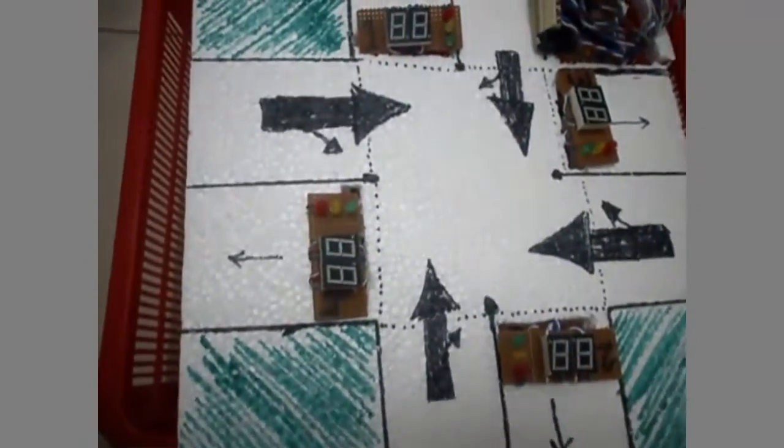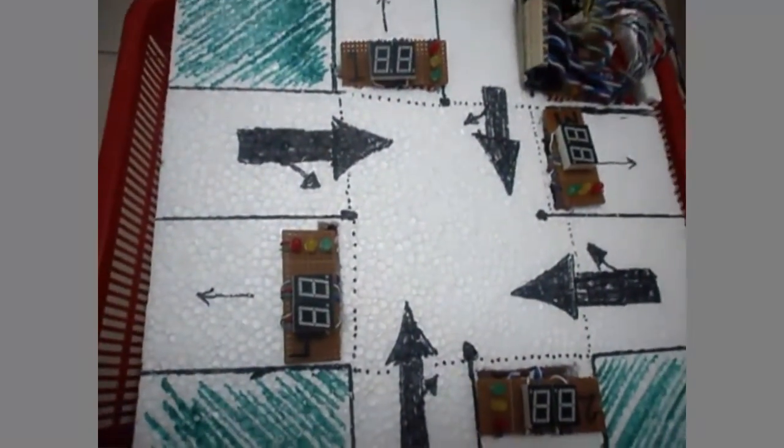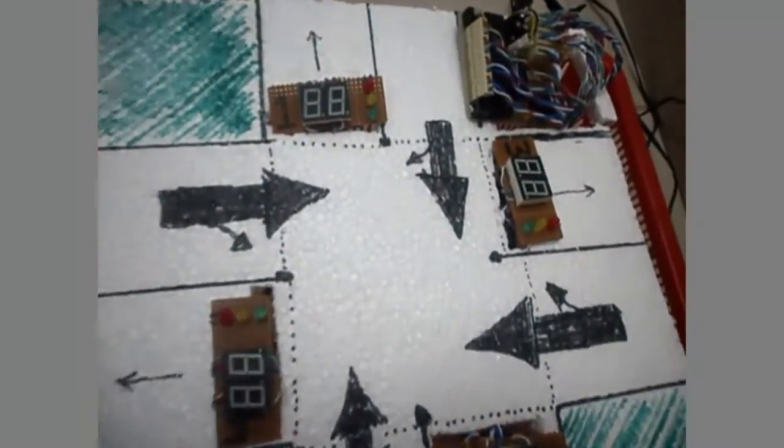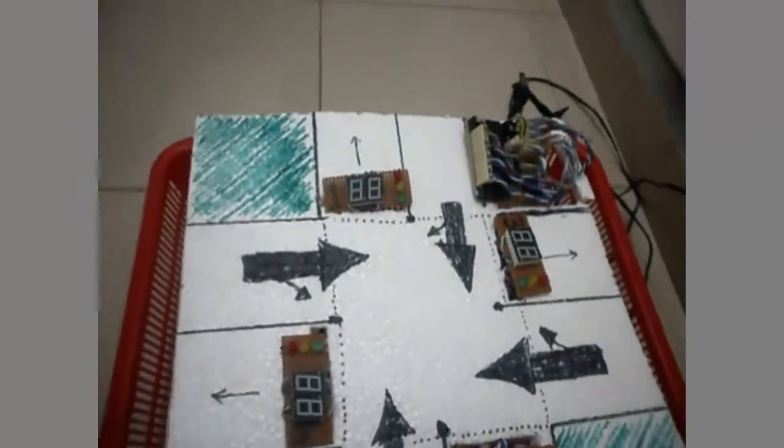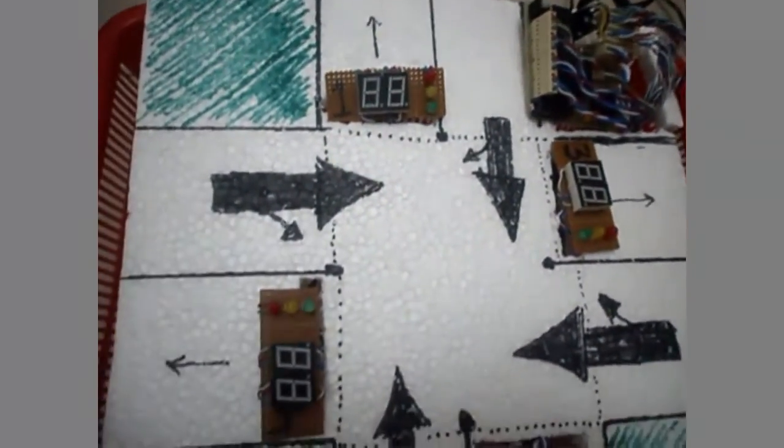And as you can see, each one of them has 2 seven-segment displays to display the count number or the digits of the current count. They are all programmed to be countdown timers.